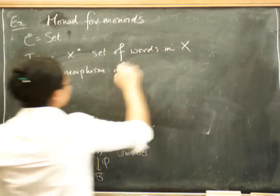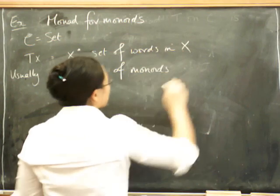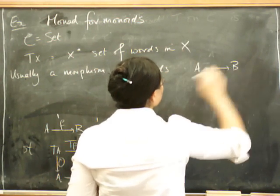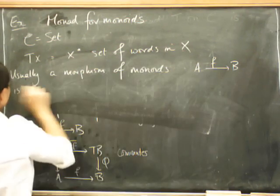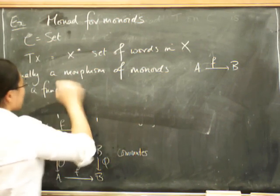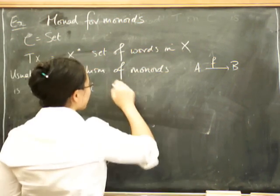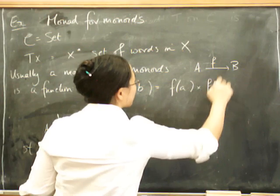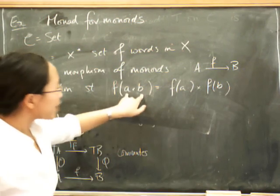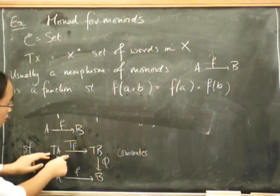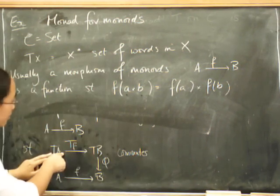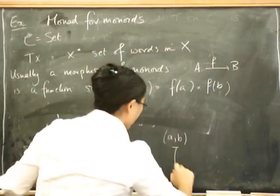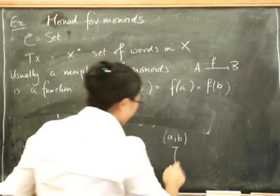Usually a morphism of monoids, let's call it A to B, is, let's call this F, which is a function such that it interacts properly with the multiplication. So that's saying that F of A times B is the same as F of A times F of B. Now remember that multiplication here is given by the action of the monoid. So what does this correspond to down here?